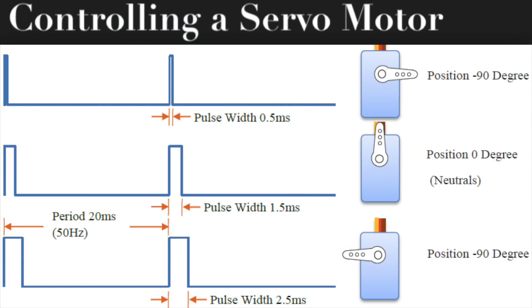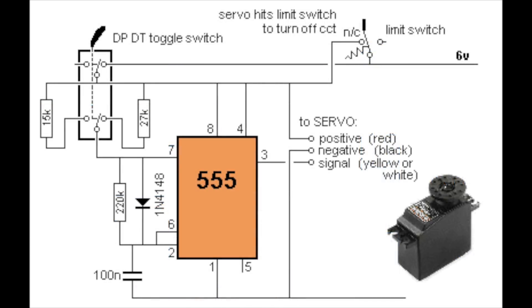We can operate this servo motor using a 50 Hertz pulse width modulation signal. A 50 Hertz PWM signal in the range of 1 millisecond to 2 milliseconds can make the servo rotate from 0 degrees up to 180 degrees and vice versa.